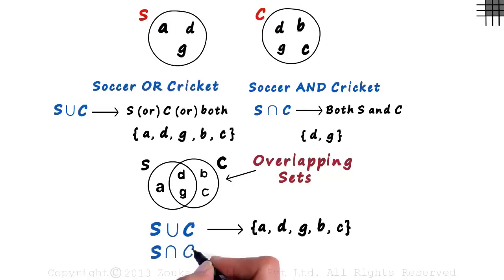And what about S intersection C? This is much simpler. We just write the elements in the overlapping region: D and G. This means that once we draw the Venn diagrams correctly, union and intersection can be found out within a few seconds.